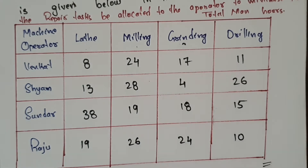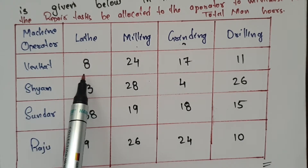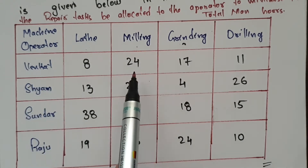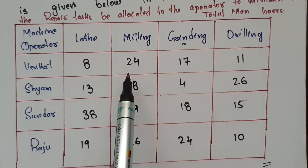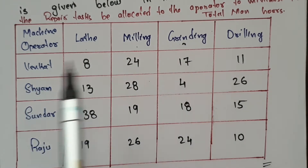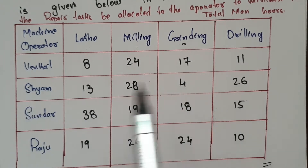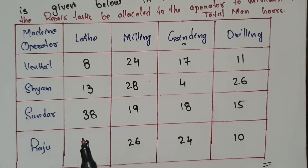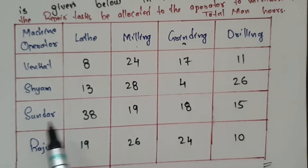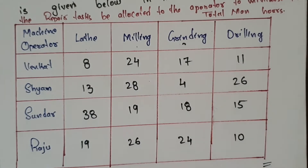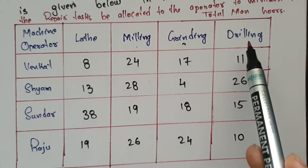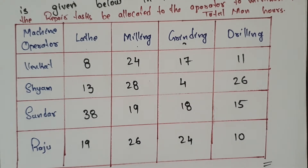As given in the question: Venkat on lathe 8 hours, milling 24 hours, grinding 17 hours, drilling 11 hours. Shyam: lathe 13, milling 28, grinding 4, drilling 26. Sundar: lathe 38, milling 19, grinding 18, drilling 15. Raju: lathe 19, milling 26, grinding 24, drilling 10.